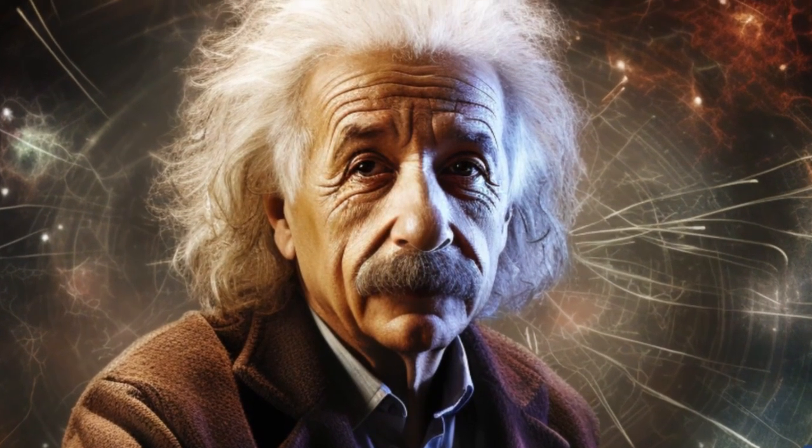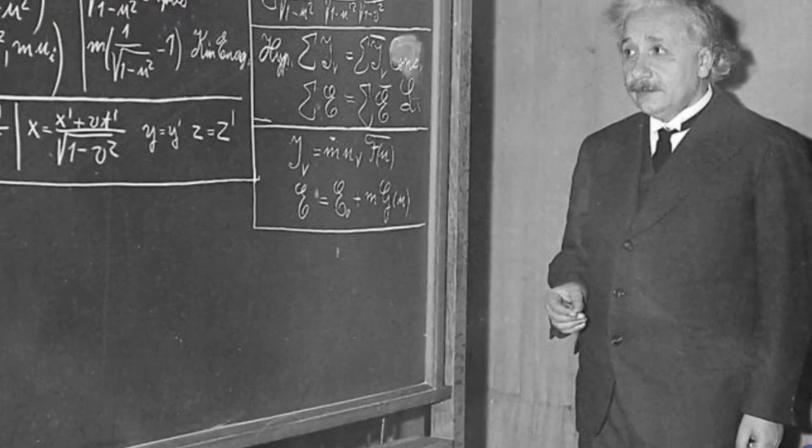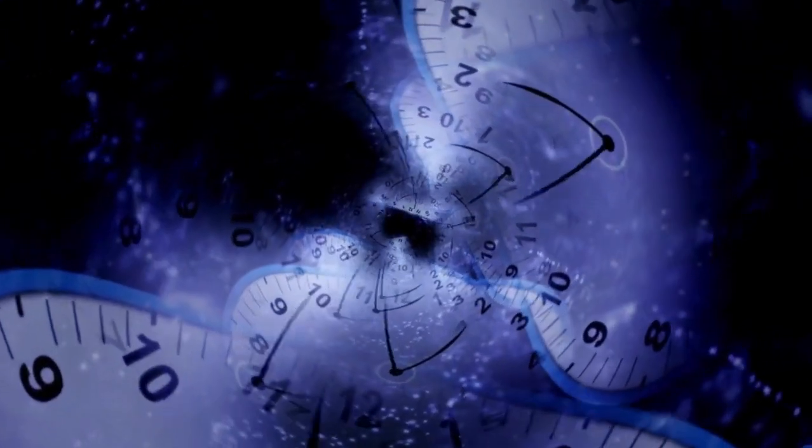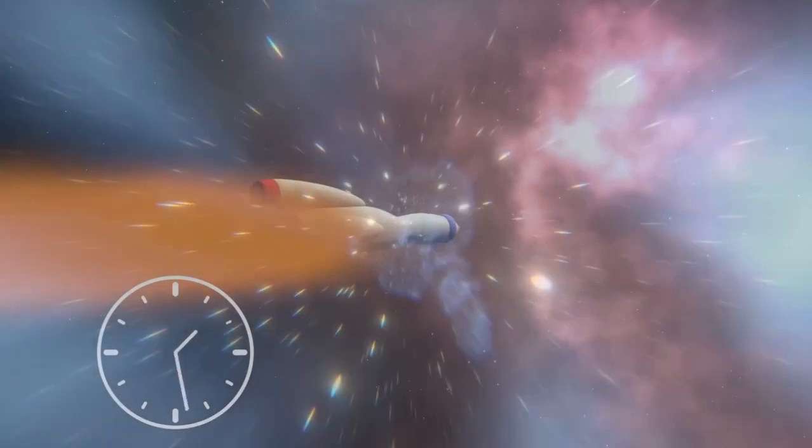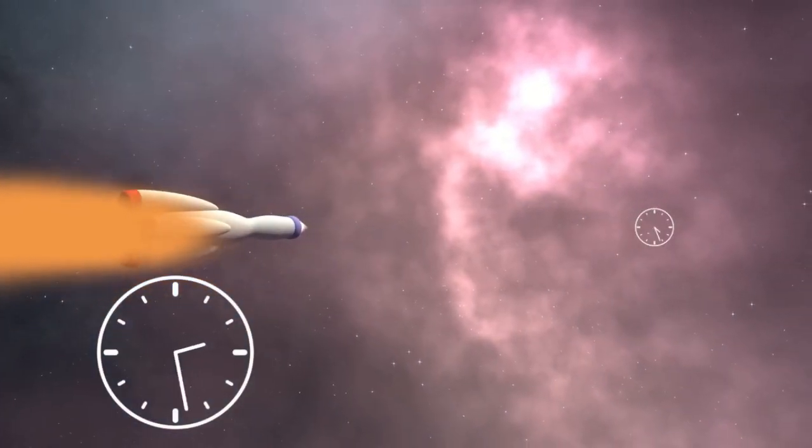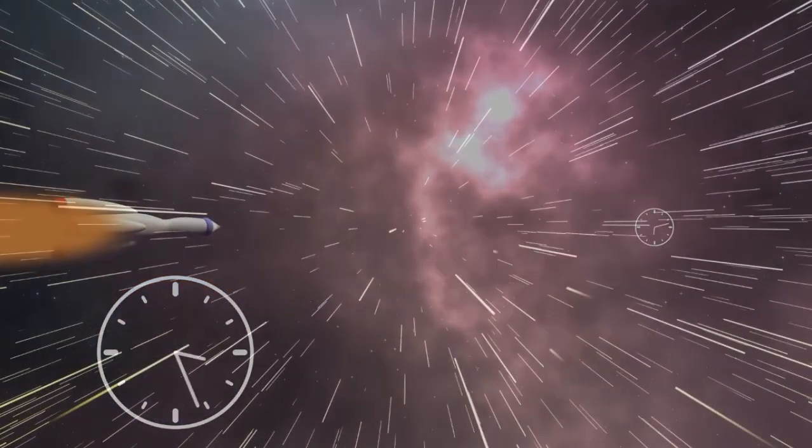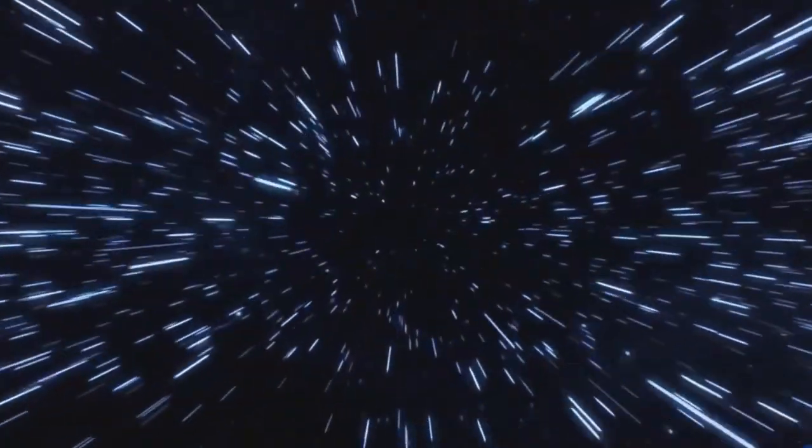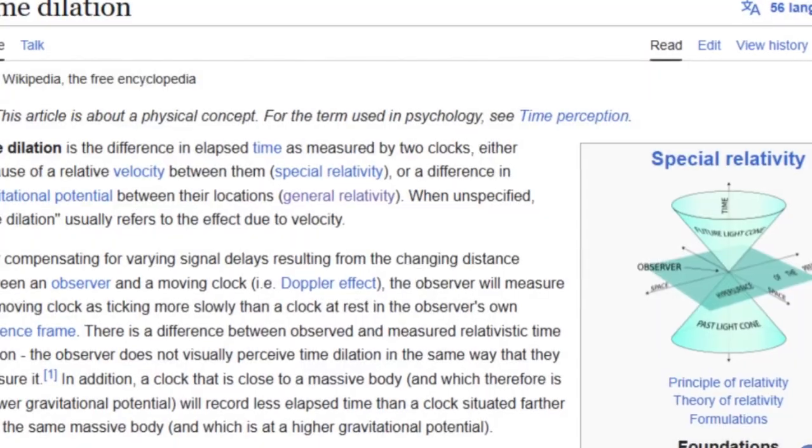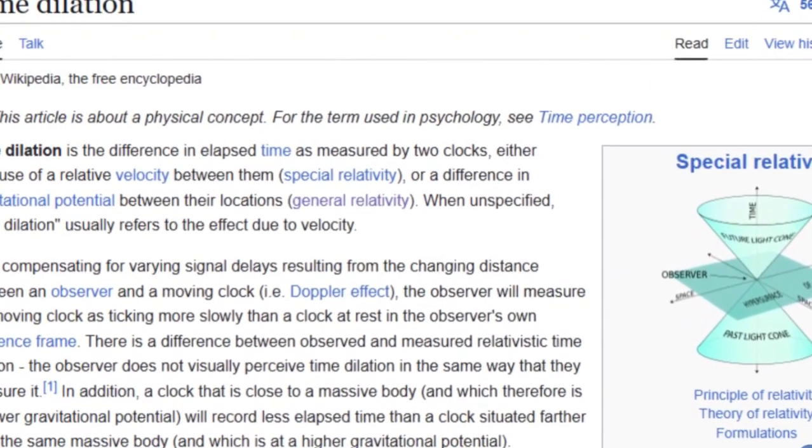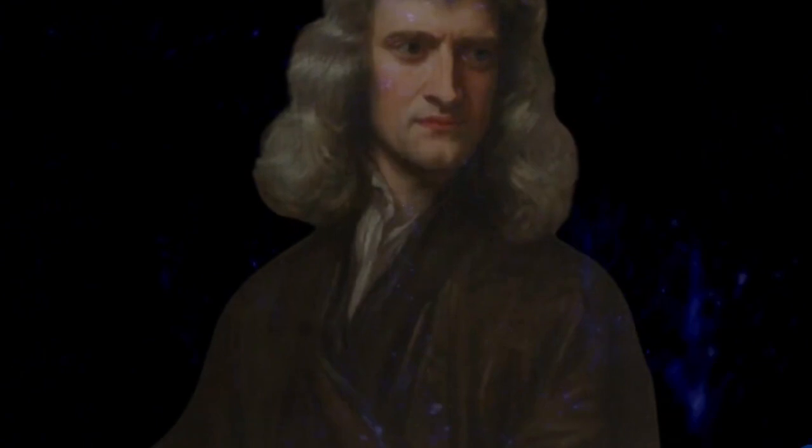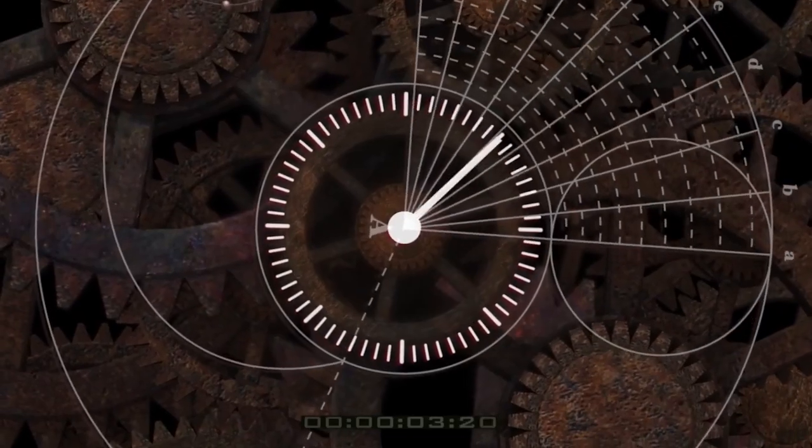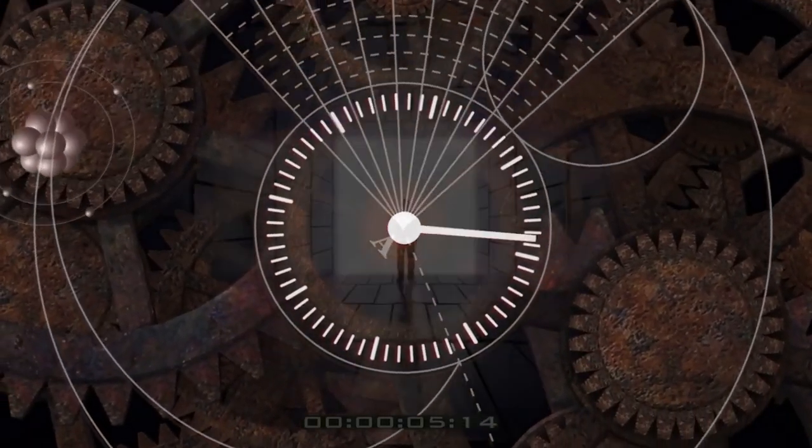In his special theory of relativity, Einstein proposed that time is not a universal constant but is relative, varying with the observer's state of motion. He demonstrated that as an object approaches the speed of light, time for that object slows down relative to a stationary observer, a phenomenon known as time dilation. This was a radical departure from Newtonian mechanics, suggesting that time is intertwined with space, forming a four-dimensional continuum known as space-time.